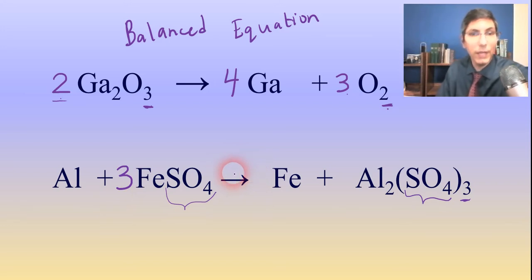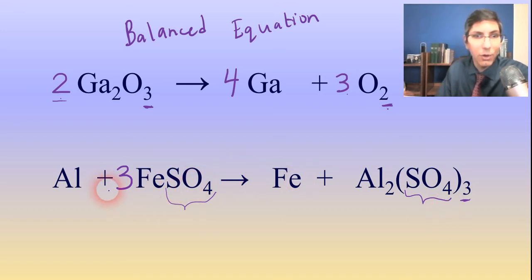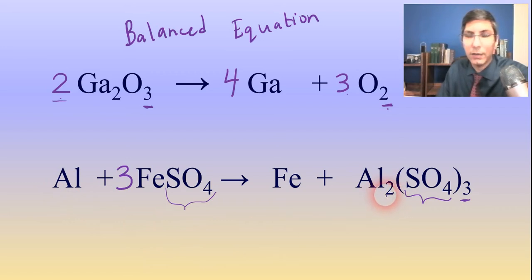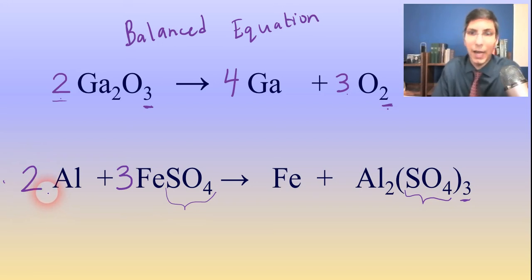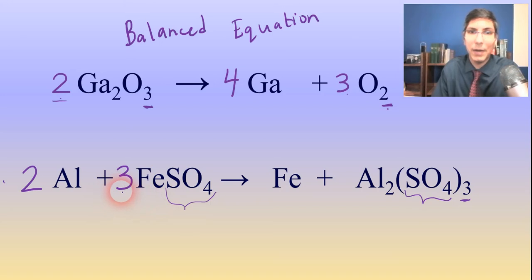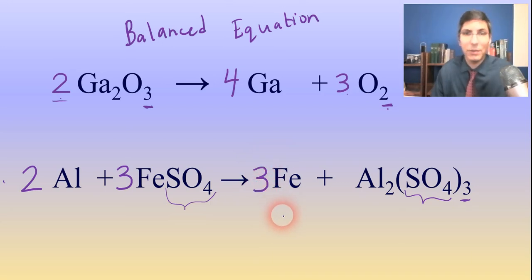Now I can move on to the next element — I'll take my pick of either iron or aluminum. Let's do aluminum next. I have one aluminum on the left and two aluminums on the right. So I have to multiply the one on the left by two, putting a 2 right here. Now my aluminums are balanced. Next, let's balance the irons last. We have three irons on the left side — we had one, but we had to times it by three. We have three and only one on the right, so I have to times this one by three as well. Now we have a balanced equation.